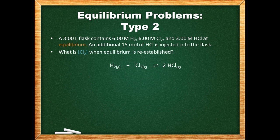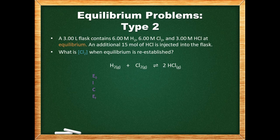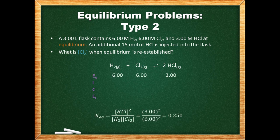In this next problem, hydrogen, chlorine, and hydrogen chloride are at equilibrium, but an additional 15 moles of hydrogen chloride are inserted into the flask. Remembering Le Chatelier's principle, an increase in the product concentrations is going to cause a shift left. We are asked to find the concentration of chlorine when equilibrium is re-established. We have all the concentrations at the original equilibrium, so we can use those to find the equilibrium constant. With the initial concentrations and the equilibrium concentrations, we will be able to find the concentrations at the re-established equilibrium. We set up an ICE table with an extra row for the initial equilibrium concentrations. 15 moles of hydrogen chloride in 3 liters is 5 moles per liter, giving us 8 moles per liter after adding to the initial equilibrium concentration.